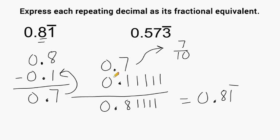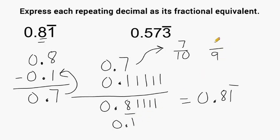Now zero point repeating one can be expressed as 0.1 with a line over it. You count how many digits are located underneath this line — that's how many nines you write. So we write a single nine, and then we take the digit underneath the line and write that as our numerator. So one-ninth is equivalent to zero point repeating one, and seven-tenths is equal to 0.7.